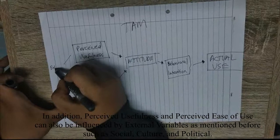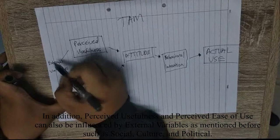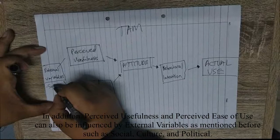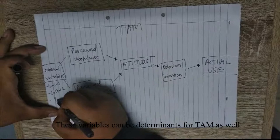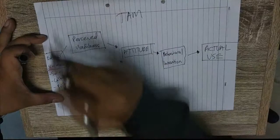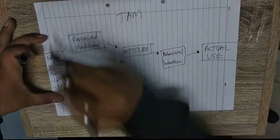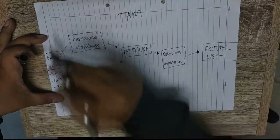In addition, Perceived Usefulness and Perceived Ease of Use can also be influenced by external variables, as mentioned before, such as Social, Cultural, and Political factors. These variables can be determinants for them as well. That's all from me. I hope this explanation will help you get a better understanding about TAM.